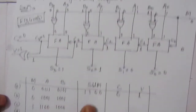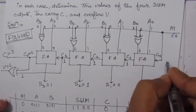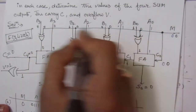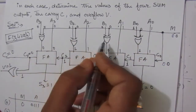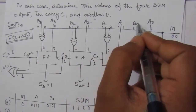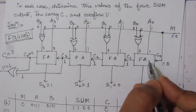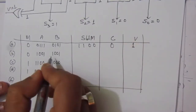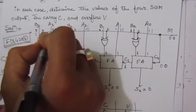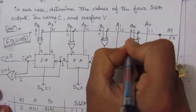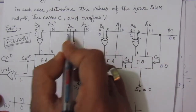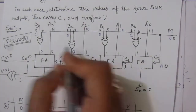In the second case, M is also 0, so 0 is applied to all XOR gates, meaning the B values pass through directly to the full adder inputs. A is 1001 and B is also 1001. The XOR outputs with M=0 are: 0 XOR 1 is 1, 0 XOR 0 is 0, 0 XOR 0 is 0, 0 XOR 1 is 1.